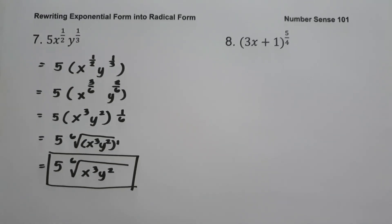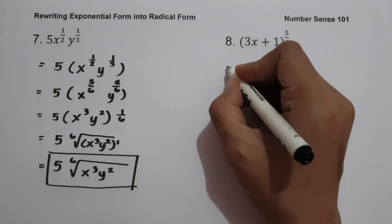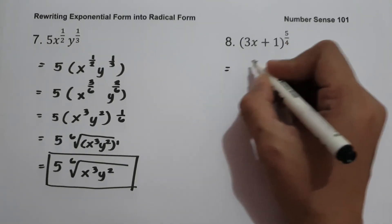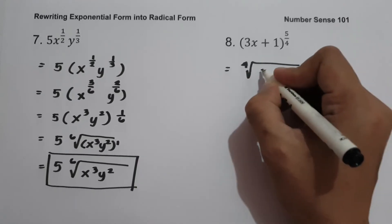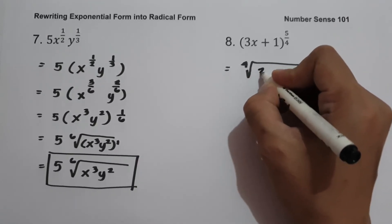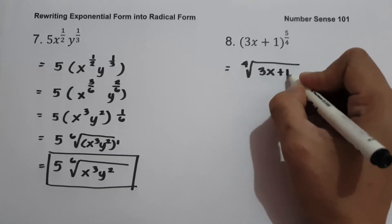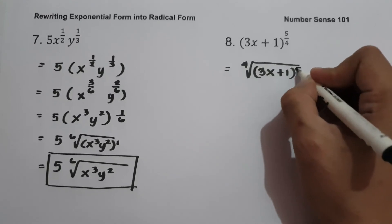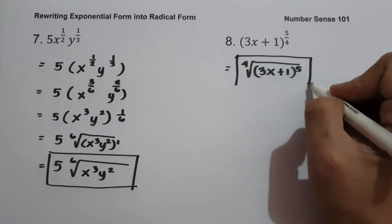On example number eight: quantity 3x plus 1 raised to 5 over 4. To write this in radical form, we have 4 as our index, giving us the 4th root of quantity 3x plus 1 raised to 5. And this will be our answer.